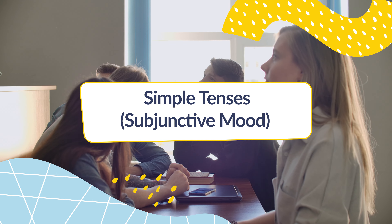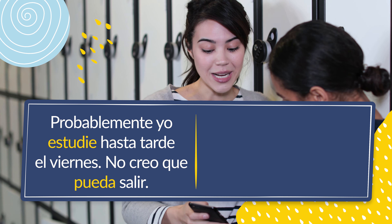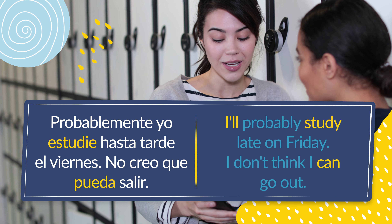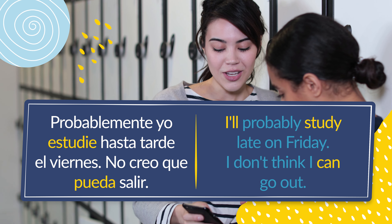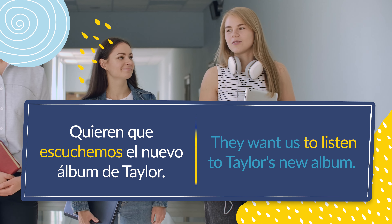Without further ado, let's jump into the simple tenses of the subjunctive mood. The subjunctive simple present tense is used for hypothetical situations. For instance, you might tell your friends something like, 'I'll probably study late on Friday, I don't think I can go out.' The present subjunctive is also very commonly used to ask politely for something in the form of a desire. So, if your friend is a diehard Swifty, you might say about them, Quieren que escuchemos el nuevo álbum de Taylor — They want us to listen to Taylor's new album.